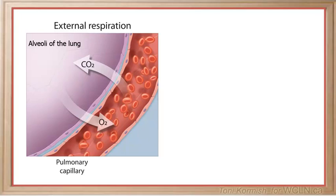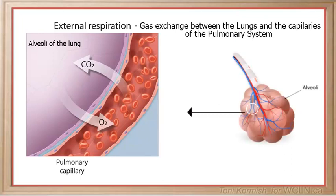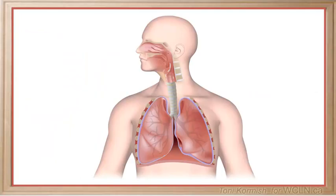External respiration refers to oxygen from outside of the body crossing cell layers into our bloodstream. It refers to gas exchange between the lungs and the capillaries of the pulmonary system. Think about what we want to gain at the lungs and what we want to get rid of — obviously we want to gain oxygen and get rid of carbon dioxide.